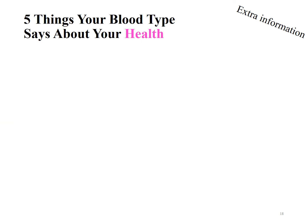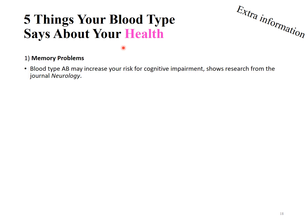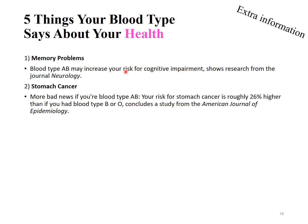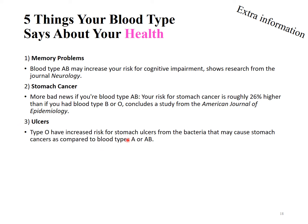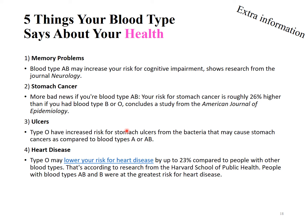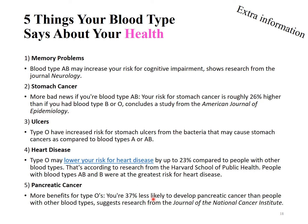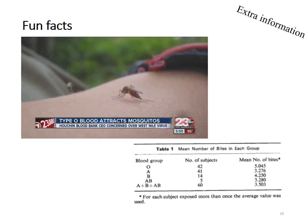Here are 5 interesting facts on blood type and health. Number 1: blood type AB individuals are more prone to cognitive impairment. Number 2: blood type AB carries about 26% higher risk of stomach cancer than blood type B or O. Number 3: blood type O has increased risk of stomach ulcers. Number 4: blood type O may lower the risk of heart disease by up to 23%. Number 5: blood type O individuals are 37% less likely to develop pancreatic cancer. However, research also shows that mosquitoes are more attracted to blood group O than other blood types, so there are pros and cons for each blood group.